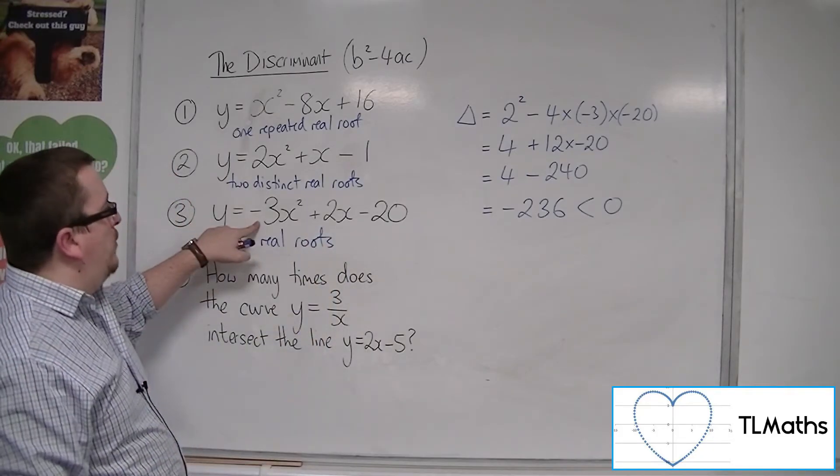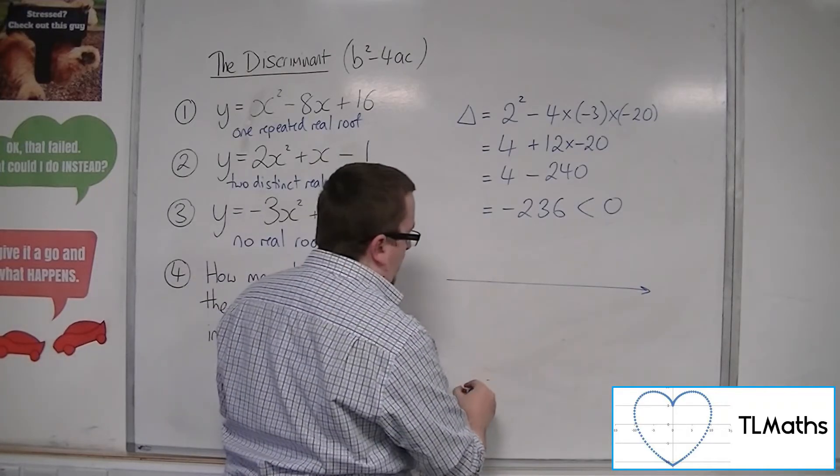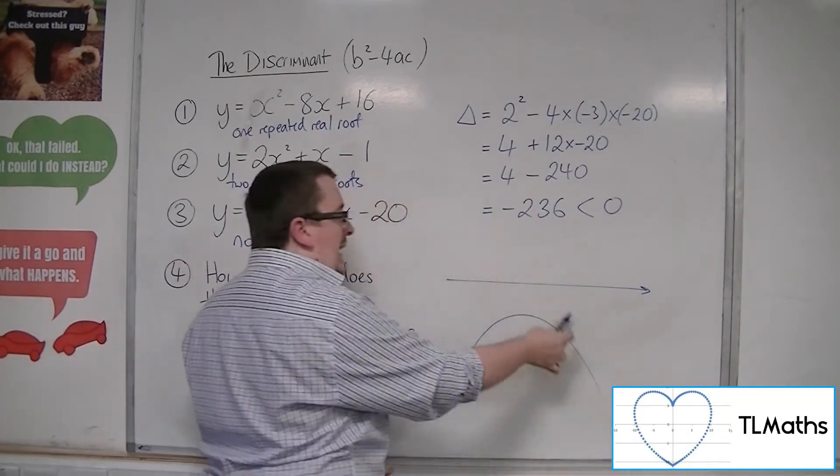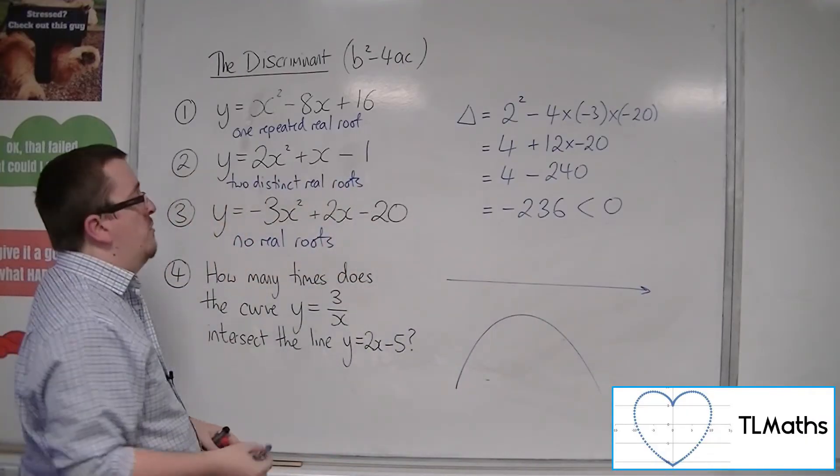Now, because the coefficient of x squared is negative, the curve must be looking something like this, and it's below, totally below the x-axis because the discriminant is negative.